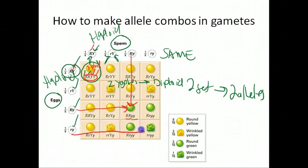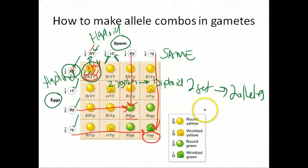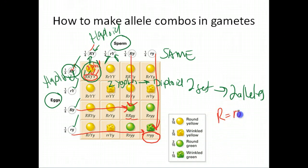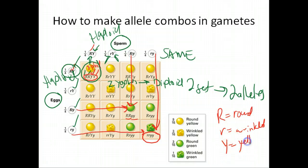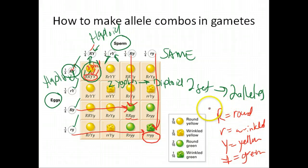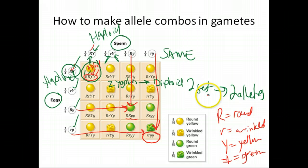You get four alleles per zygote because you're getting one set from each parent — two come from mom, two from dad — and they come together to make this diploid pea plant. To read the phenotype, you use your key: big R is dominant and means round, little r is wrinkled, big Y is yellow, and little y is green. That gives you the 9:3:3:1 phenotype ratio. This takes a lot of practice, so do the homework, practice these examples, and be willing to be wrong so that when the test counts you can be right.